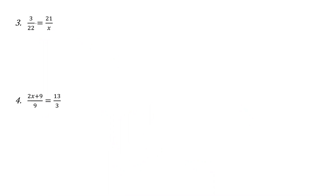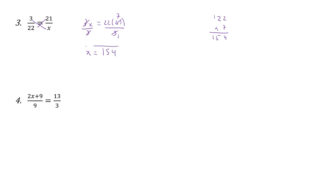A couple more examples — a simple one first, then a more complex one. Cross product gives us 3x equals 22 times 21. We divide by 3: 3 cancels into 3 once and into 21 seven times, so x equals 7 times 22. That's 154. Checking: we multiplied by 7 to get from 3 to 21, and 22 times 7 gives 154.